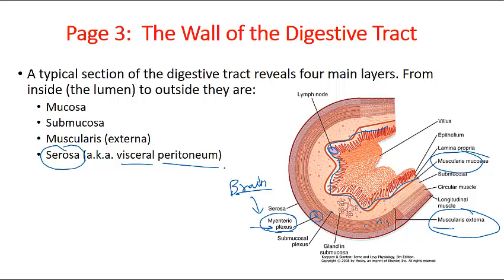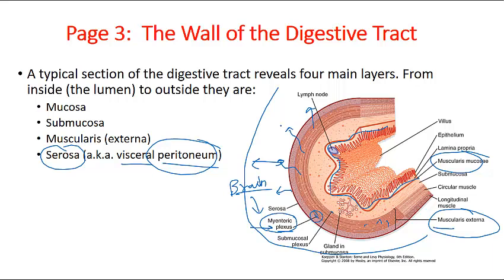The outermost layer of the digestive tract is the serosa, also known as the visceral peritoneum. This serous fluid-producing layer lubricates the intestine and reduces friction of the digestive tract within the ventral body cavity. Once food is consumed and the digestive tract increases in volumetric size, the serosa prevents harmful interaction with the ventral body cavity.